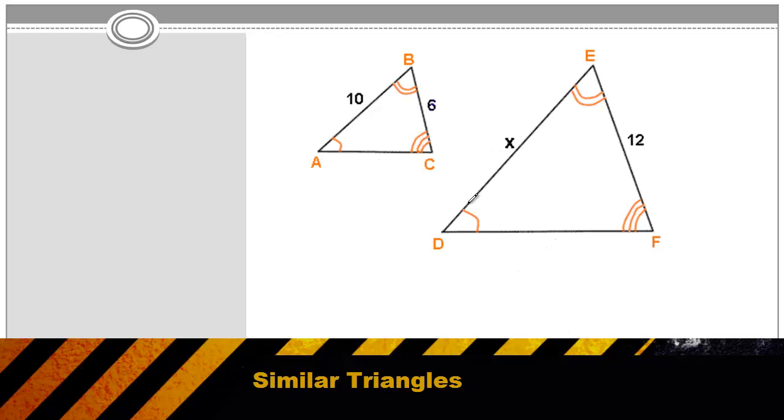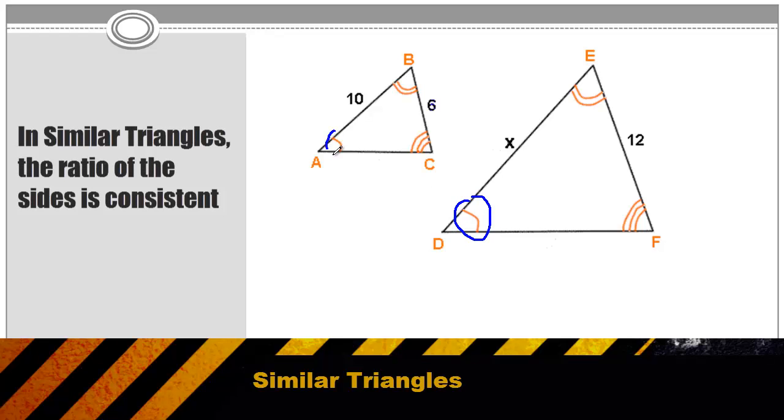In this triangle here, we've signified the measure of d with this single arc line. That same arc line exists in angle a. That's the question's way of signifying the two angles a and d are the same. Likewise, we can see that angle b with two lines is the same angle as angle e with two lines. And angle c with three lines is equal to angle f.